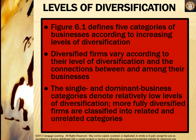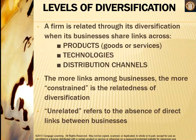The figure defines five categories of businesses according to increasing levels of diversification. The single and dominant business categories denote relatively low levels of diversification; more fully diversified firms are classified into related and unrelated categories. A firm is related through its diversification when its businesses share links across products, technologies, or distribution channels. The more links among businesses, the more constrained the relatedness of diversification. Unrelated diversification, on the other hand, refers to the absence of direct links between businesses.